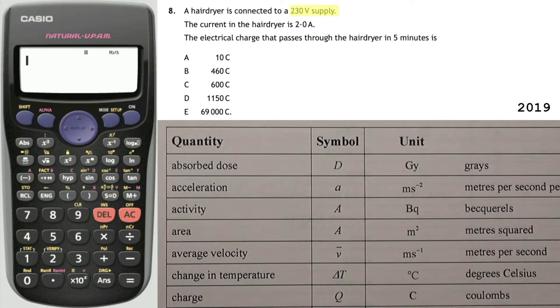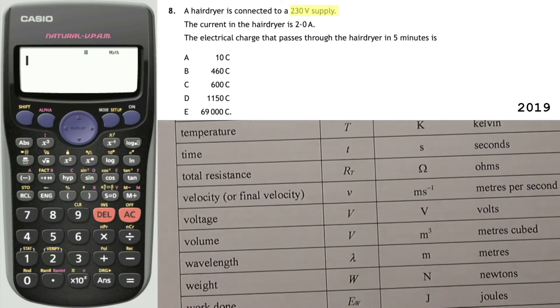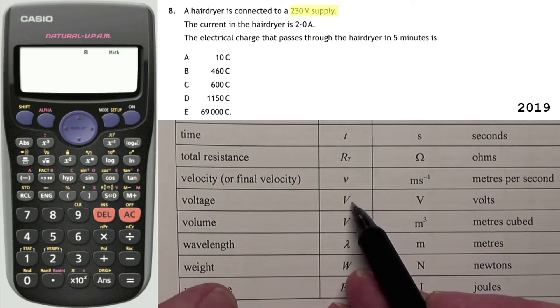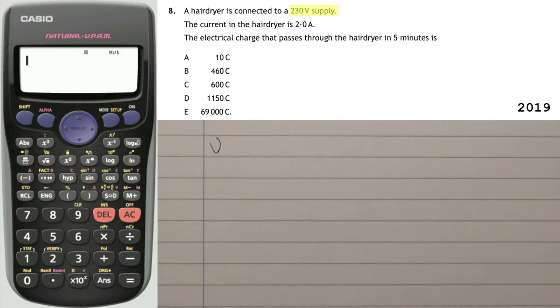But I really believe that if you memorize this table, this could really make the difference between failing National 5 and passing, the difference between getting a C and a B, between getting a B and an A. Memorize all of these quantities. Now let's look back at that question. What it says is that we have a voltage, 230 volts. If I look up this sheet, voltage is here. So in the relationship sheet we'd be looking for an equation which has a capital V. We should really write that down, V.